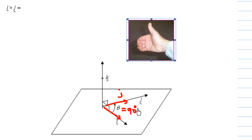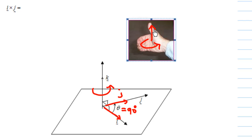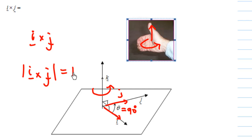When you do the cross product, you use the right hand and turn. In this case, you have to turn from i to j, which is in the anti-clockwise direction. If you use the right hand and turn anti-clockwise, the right hand thumb is pointing outward. Therefore, i cross j is parallel to k — it's in the same direction as k. The length of i cross j is 1, so i cross j must equal k.